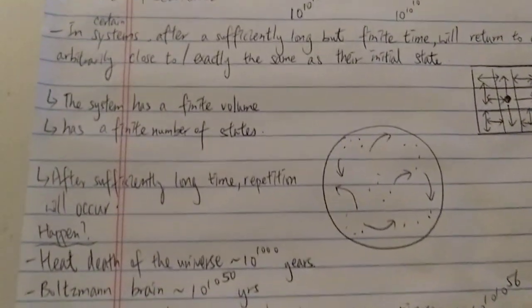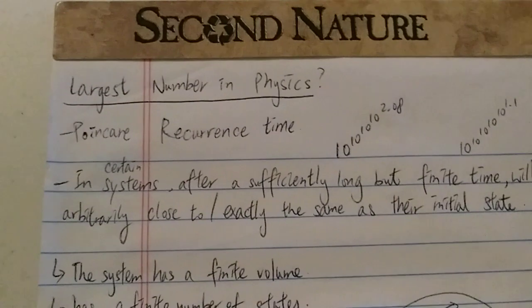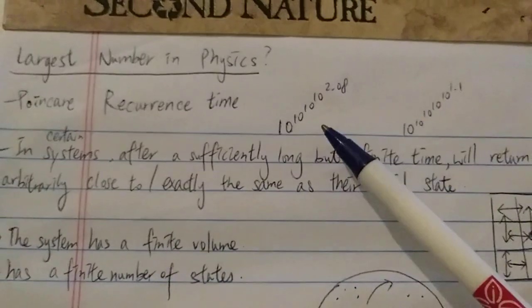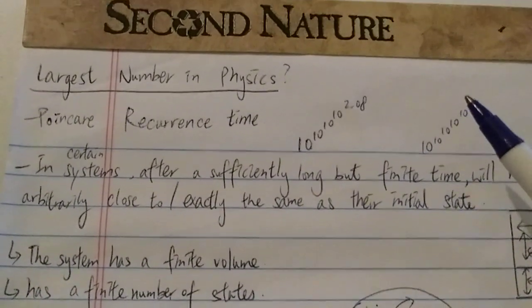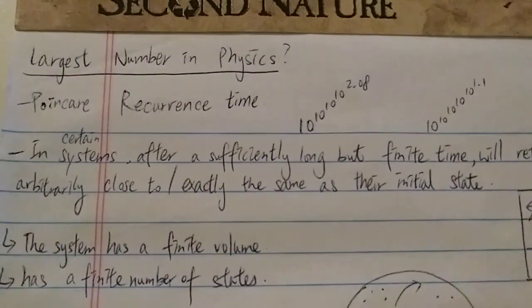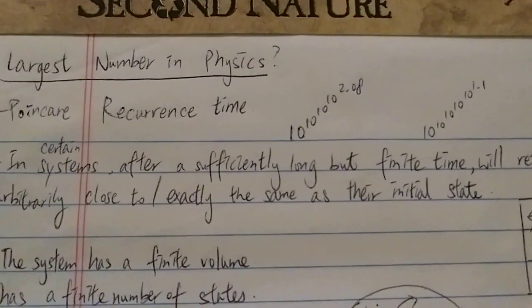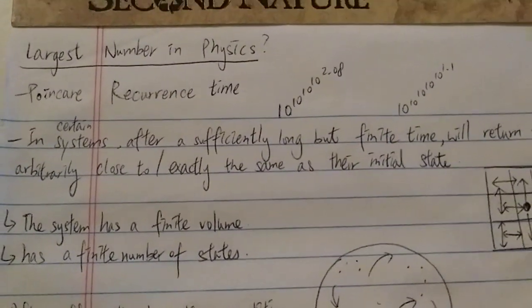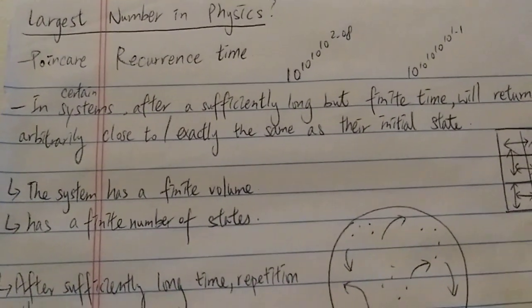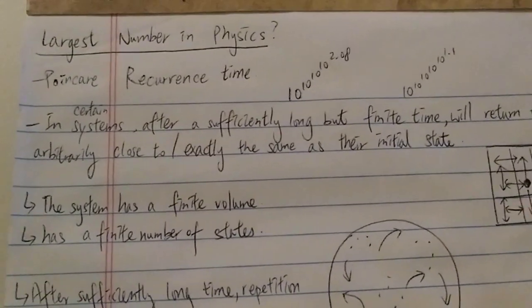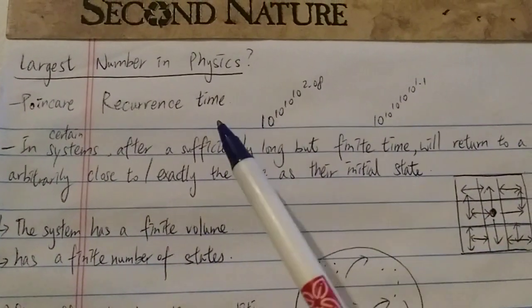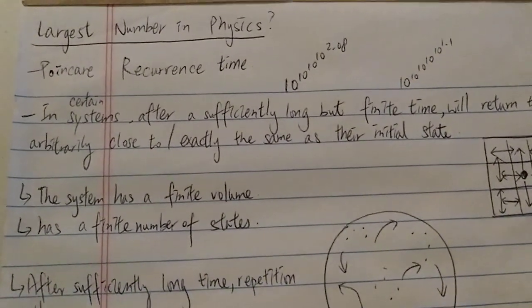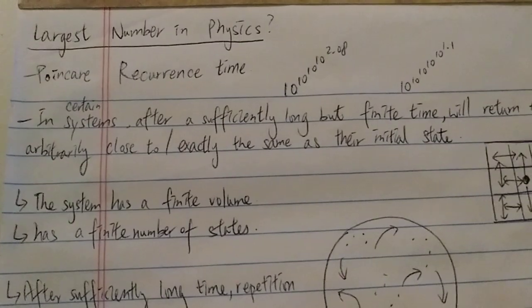That is why this is such a mind-blowing idea. Of course, while this is the biggest number ever to appear in science, compared to numbers in pure mathematics — like Graham's number or the triple-arrow notation — these numbers are nothing. That's why big numbers are so fascinating: even something as mind-blowing as this is still just a drop in the ocean. Thanks for watching and have a nice day.